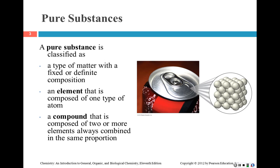We classify matter in different ways. First, a pure substance is classified as matter that's fixed in composition. An element, for example, is one type of atom — you can have many types of atoms, but if you only have one type, then all of those are the same element. A compound is composed of two or more elements, always combining in the same proportion.